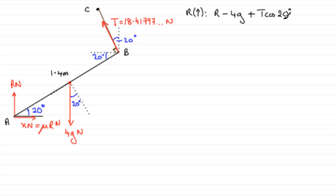And so this is the resultant force now acting on the uniform rod here, AB. And because it's in equilibrium, it's going to equal 0. So we just need to rearrange this to get R. So R is going to equal 4g minus T cos of 20 degrees. And you could either leave it like this or you could put your value that we found for T in. If you do, let's say you put your 18.41797 in here, you end up with that R equaling 21.8927 and so on Newtons.